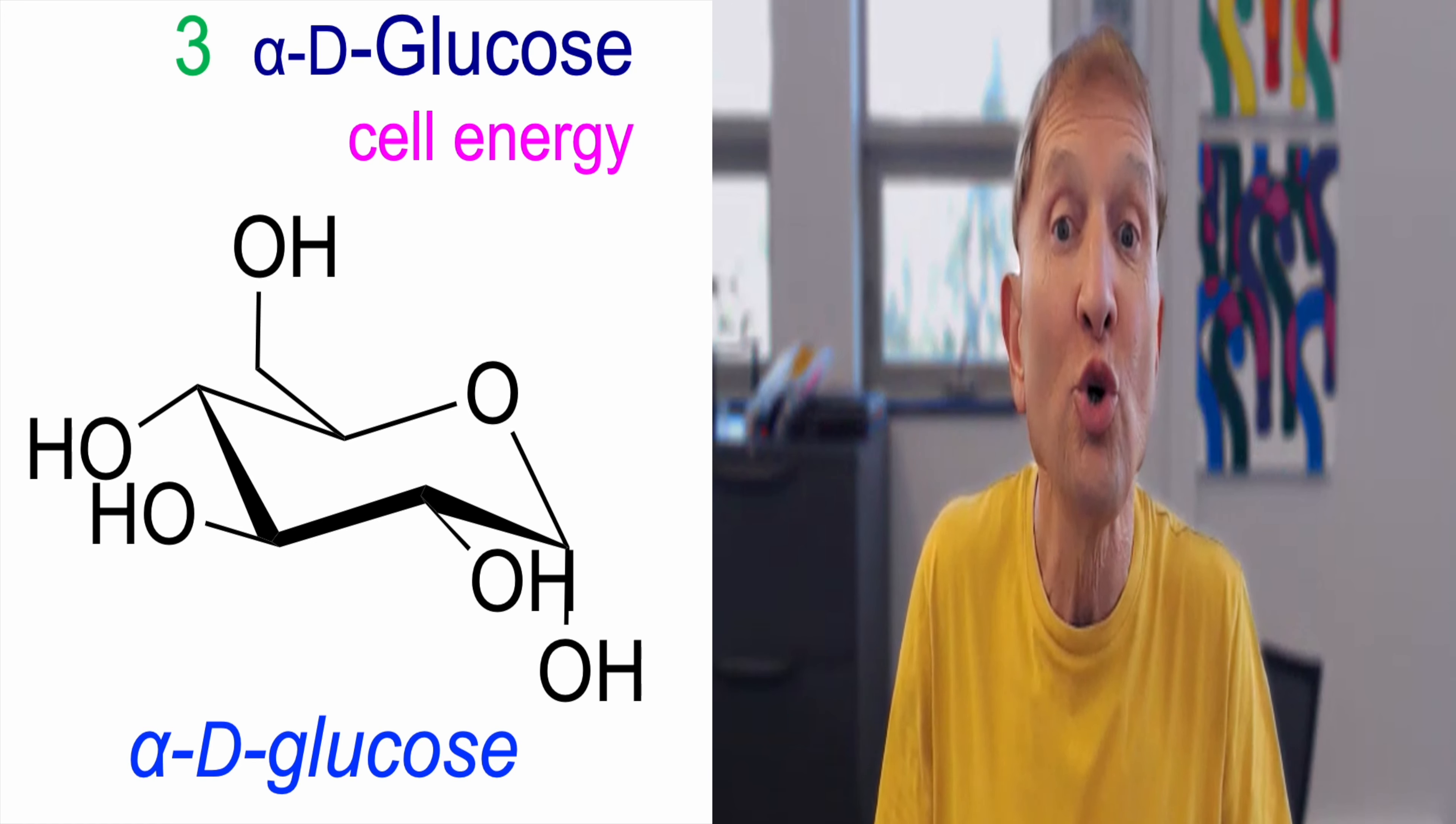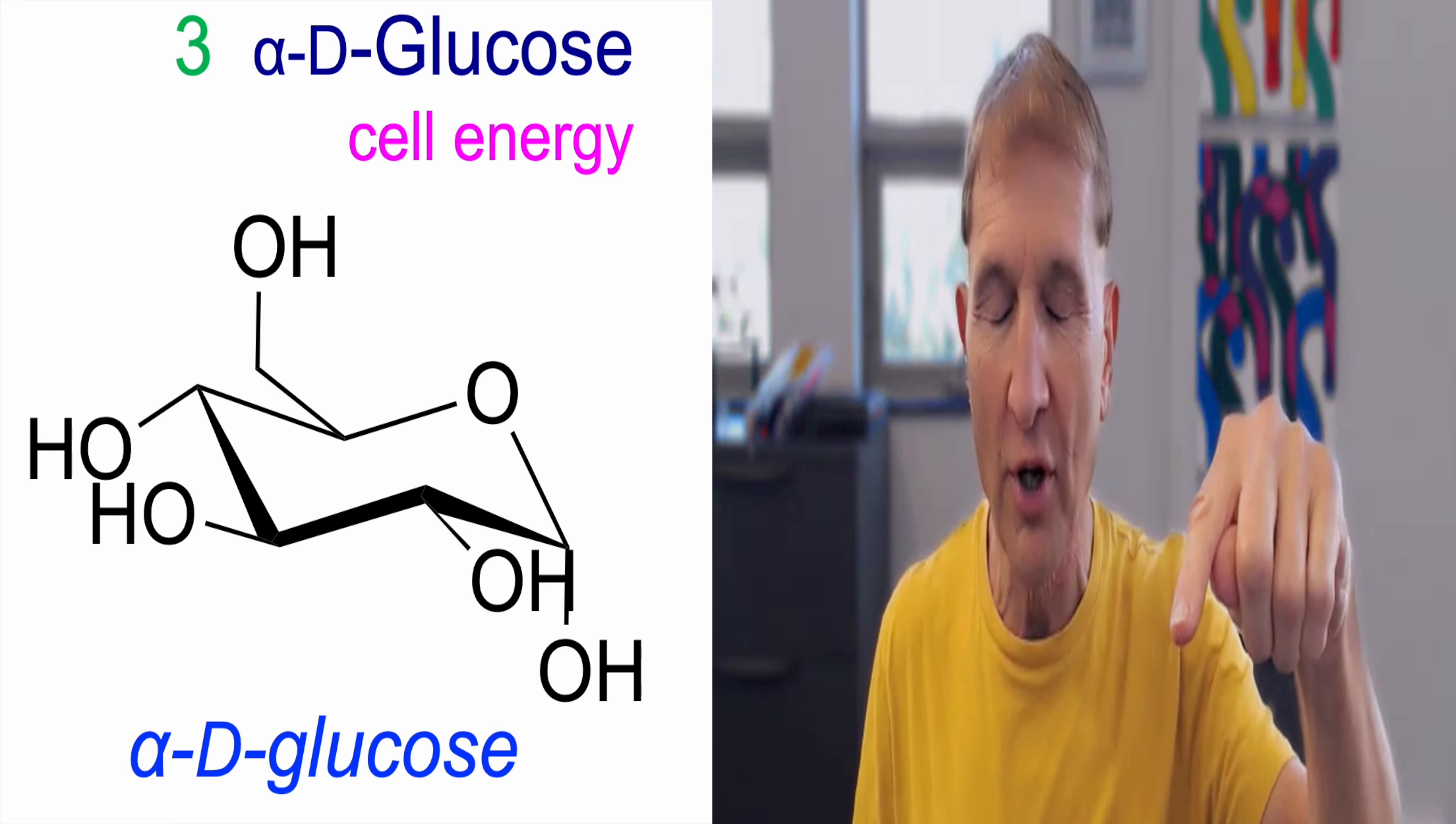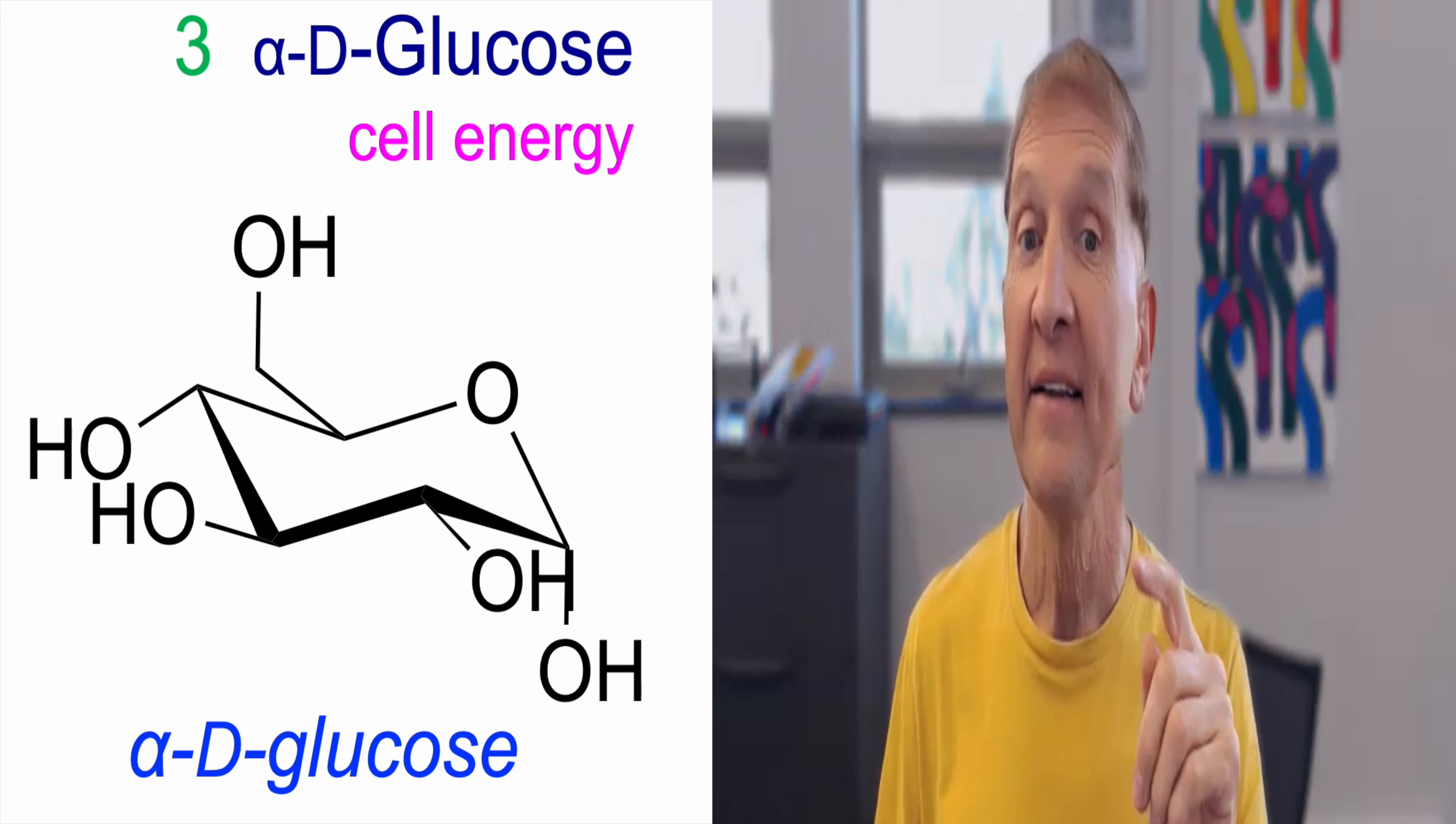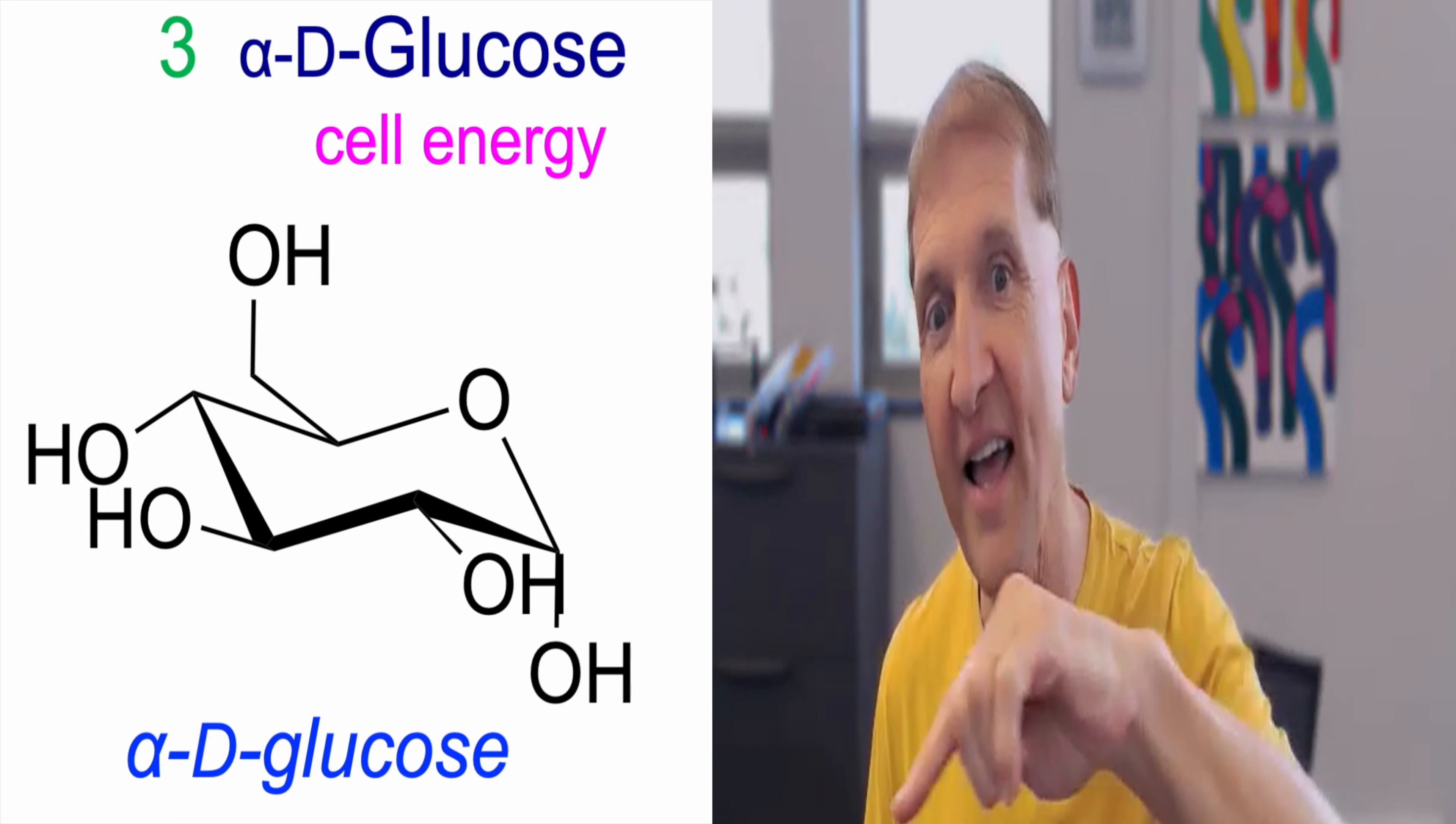For D-glucose, draw a six-membered ring. And in the chair form, all the OHs around the circumference of the molecule are in equatorial positions. And so is the CH2OH, the hydroxymethylene. The OH at C1, the anomeric position, can be either down or up. But all the other substituents are equatorial.